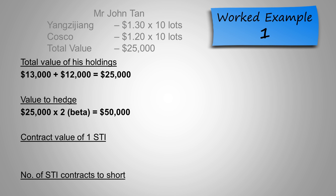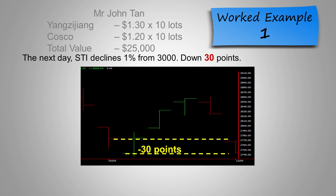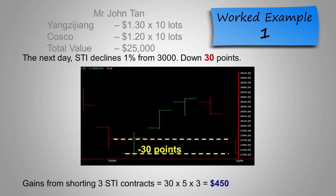Given the current value of the STI is $3,000, and the price per point being $5, the contract value of STI would be $15,000. Therefore, the total number of STI contracts to short would be the result of dividing the value to hedge by the contract value of STI, which gives us 3 contracts. The next day, the STI index declined 1% from 3,000, giving us a total of 30 points. The gains from this would be 30 points multiplied by $5, multiplied by 3 contracts, giving us a total of $450.